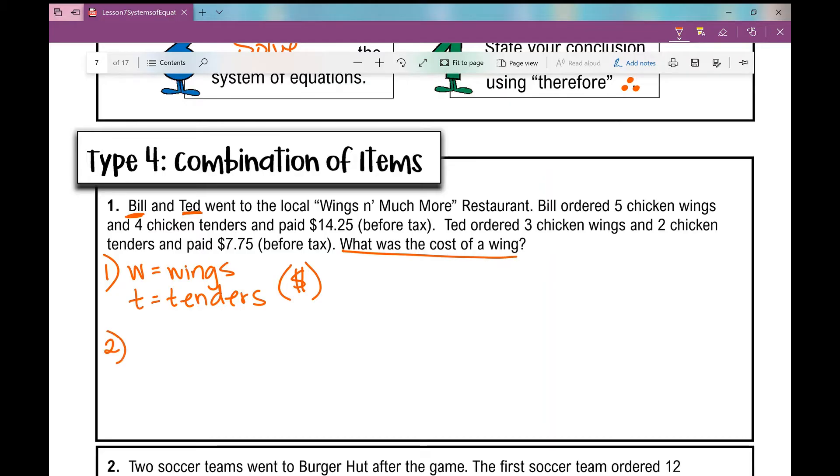So now let's set up our system of equations. In this kind of situation, we have Bill's situation and we have Ted's situation. When I talk about Bill's situation, I'm actually going to write this in standard form. Bill ordered 5 chicken wings, so 5 times the amount of a wing and 4 chicken tenders, so plus 4 tenders, and he paid $14.25. Now let's look at Ted's scenario. He ordered 3 chicken wings, 3 wings, 2 chicken tenders, plus 2 tenders, and he paid $7.75.